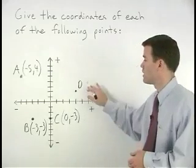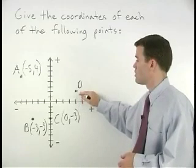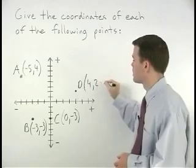And for point D, we move 4 units to the right and 2 units up. So that's 4, 2. So that's what we do. Thank you.